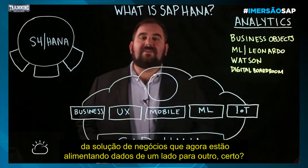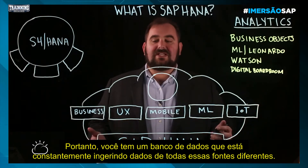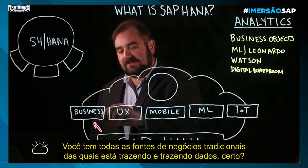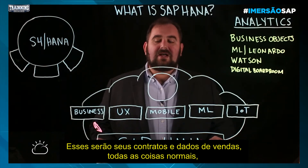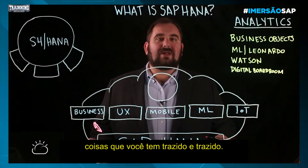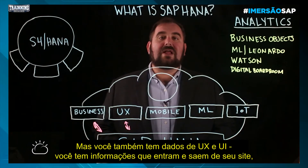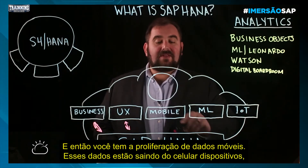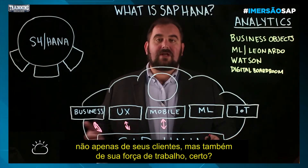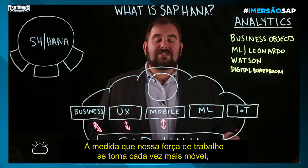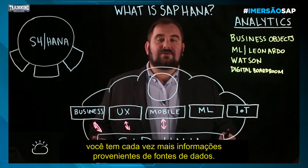Why does that matter? It matters because you have all these different pieces of the business solution feeding data back and forth. You've got a database that's constantly ingesting data from all these different sources — your traditional business sources like contracts and sales data, UX and UI data coming in and out of your website and forms, and then the proliferation of mobile data coming out of mobile devices, not just from your customers but also from your workforce.